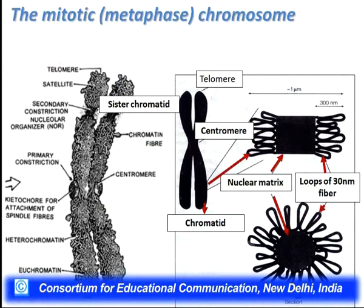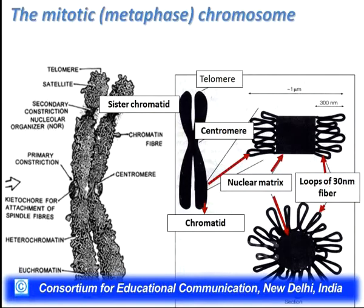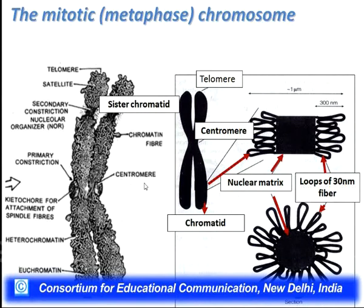Looking at metaphase chromosomes — the highest form of condensation — a chromosome has a typical structure: there is a centromere (primary constriction), sister chromatids, a secondary constriction, and telomeres. Different regions are highly condensed (heterochromatin) or less condensed (euchromatin). Centromeres are constitutive heterochromatic regions with arms called sister chromatids. Inside there is a nuclear matrix where loops of 30-nanometer fibers are organized.